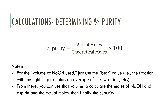Just some notes about your report sheet: it asks for the volume of NaOH used, and you'll need that value in your calculations, so use the best value. The best value could be the titration that had the lightest pink color, or if that's too difficult to tell from the video, you can average the two trials. If there's another reason that makes sense to you, you can use that, but it will ask you why you picked the best value and you have to explain it. Once you have that volume, calculate the moles and then the percent purity as shown, and that's what we will end with in this lab.